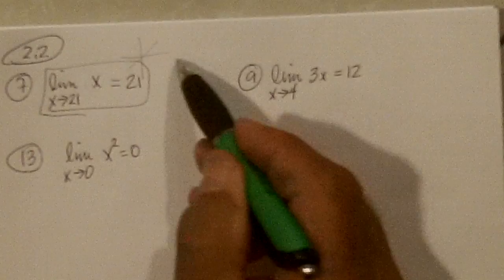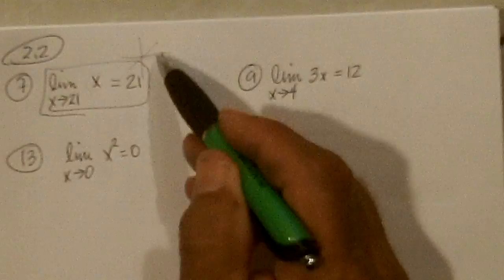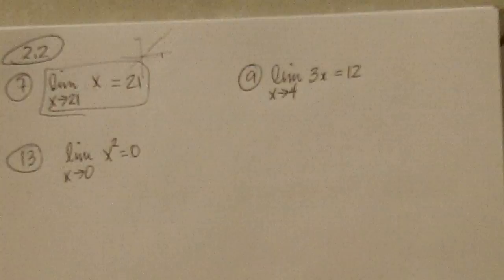y equals x is a line, and as you get closer to 12 in the x direction, the y height also gets closer to 12 from either way.